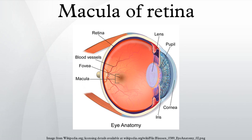Visual input from the macula occupies a substantial portion of the brain's visual capacity. As a result, some forms of visual field loss can occur without involving the macula. This is termed macular sparing.